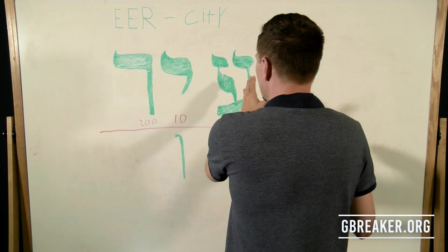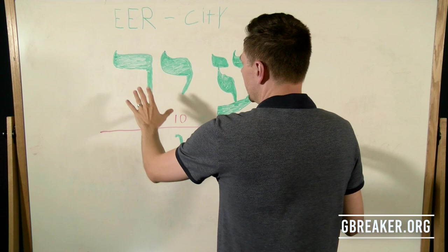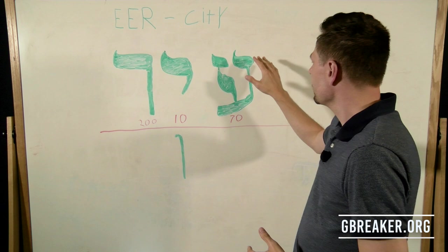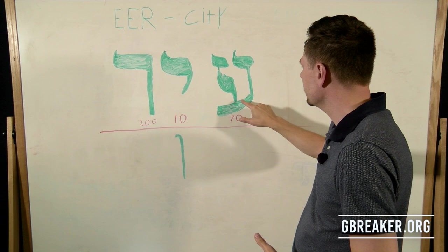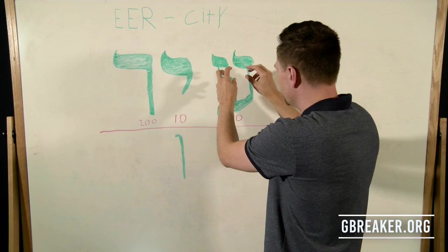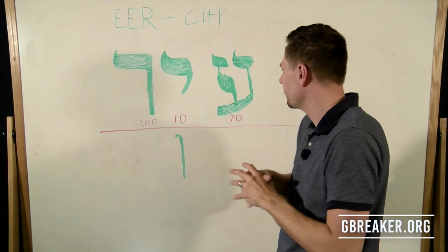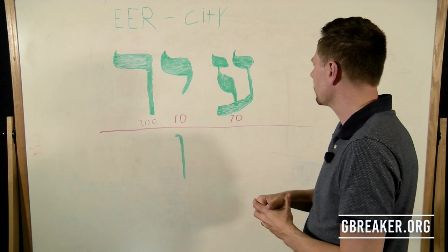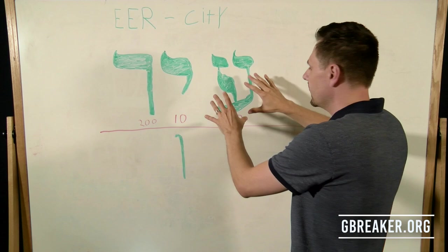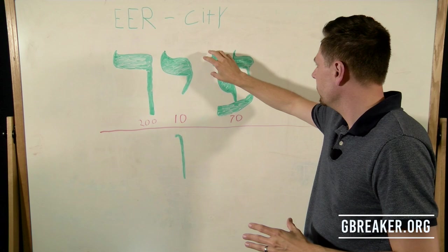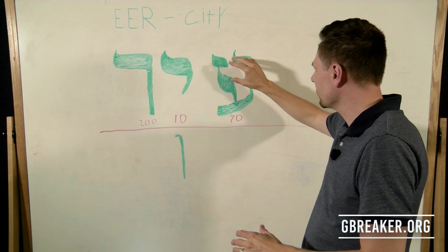The word starts with the letter ayin and then moves on to the letter yod, and then we have the letter resh. The ayin is a picture of two eyes — it's made up of two yods with a connective optic nerve that goes to the brain. So it literally means to see, behold, or look at something. That's the letter ayin, and it's the number 70 in Hebrew gematria. I love how these letters are so visual.